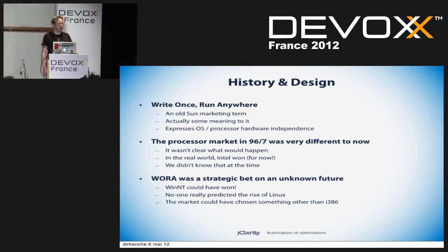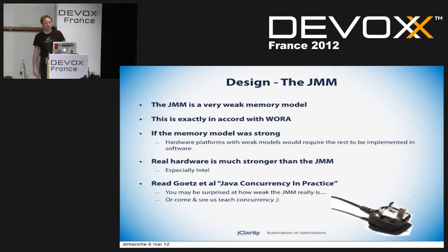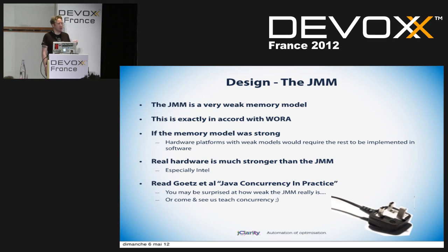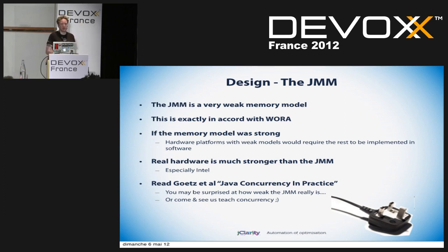Write once, run anywhere was a strategic bet — one of the things which made the platform credible in those years. But there are consequences. Let's talk about a specific example: the Java Memory Model, the JMM. The JMM is actually a very weak memory model, and that's a good thing — it makes it easy to port to architectures. But it also means you have very weak guarantees. If the JMM gave very strong guarantees for memory consistency, it would make the life of the person porting Java to new hardware very difficult.